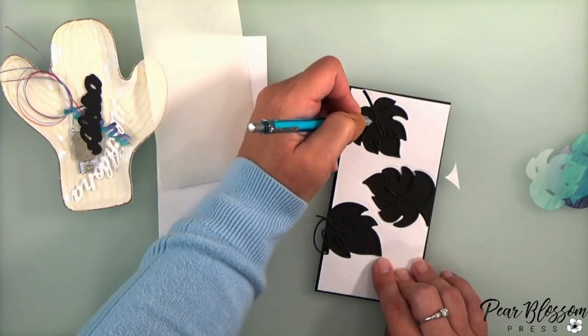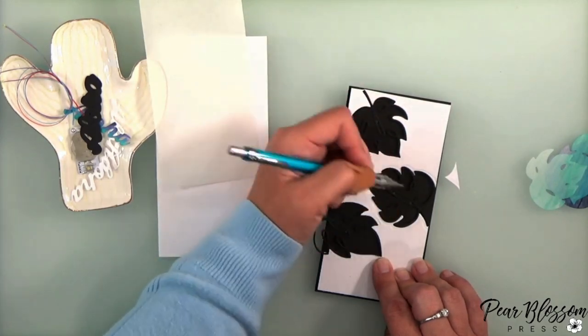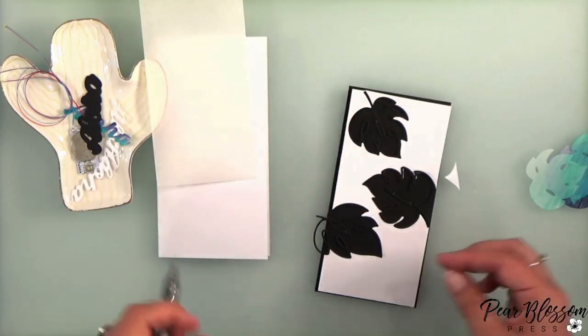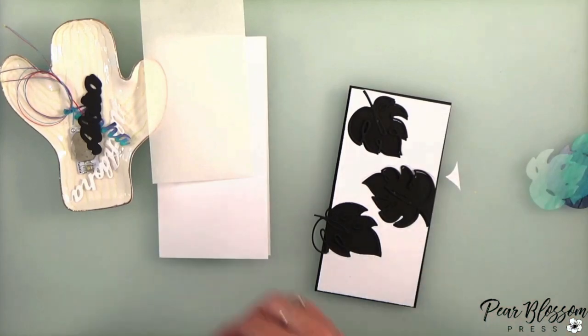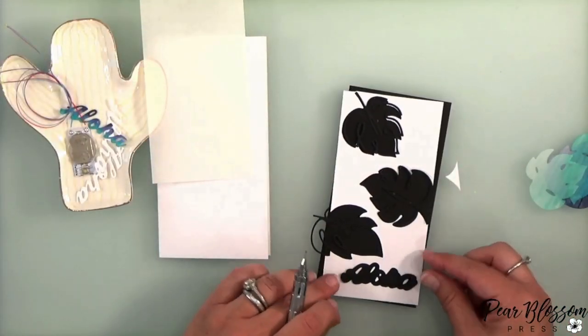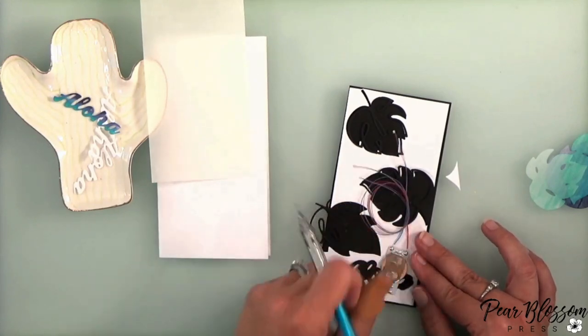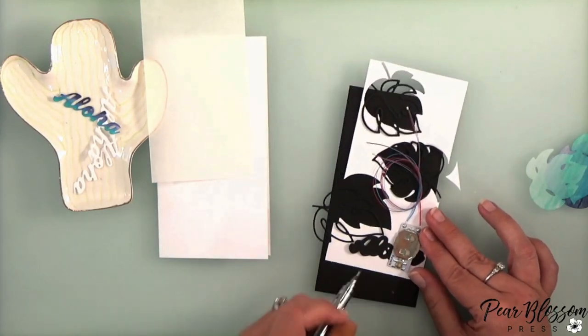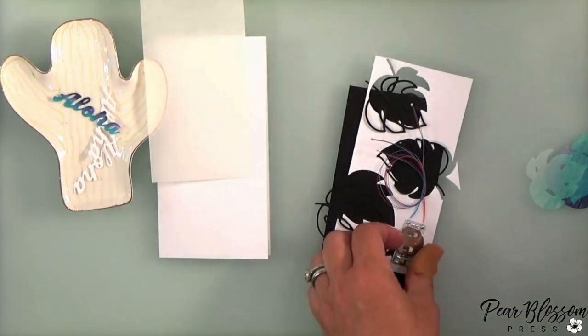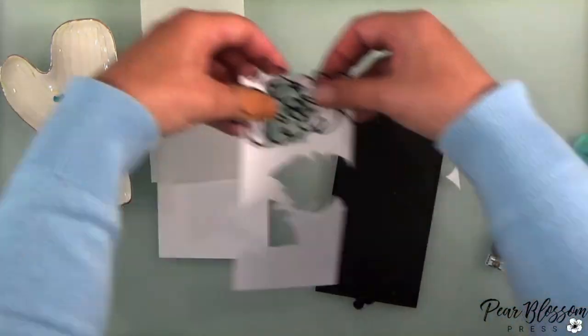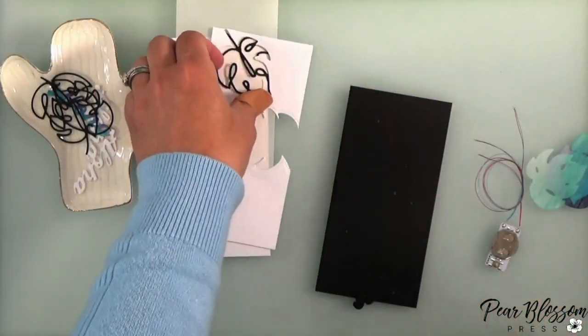So I'm kind of deciding where I want the lights. That center leaf I wasn't sure if I wanted it towards the top or the bottom, and then I also need to mark on my panel where the button will be for the light. So you can see I just marked on the black panel. I hovered my pencil over the white, moved it out of the way, and then marked on the black panel.